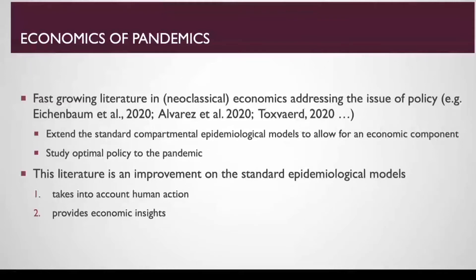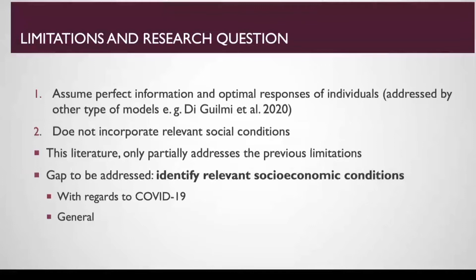This type of work has some important limitations. One is that this literature assumes perfect information and optimal responses of individuals. Most of the models in this literature, by assuming perfect information and optimal responses, do not take into account the fact that even epidemiologists and physicians working in this field do not have enough information about the epidemiological issues themselves. At the same time, although they take into account human action, they do not incorporate other relevant social conditions, so this literature only partly addresses the limitations I mentioned.